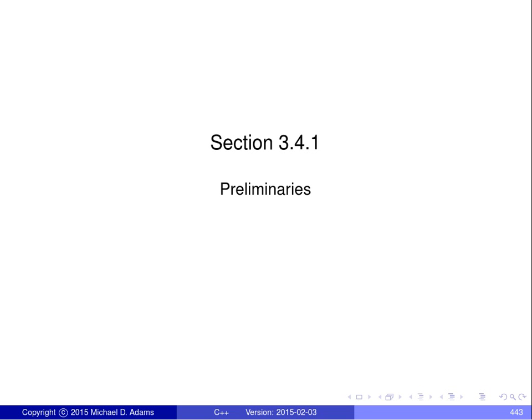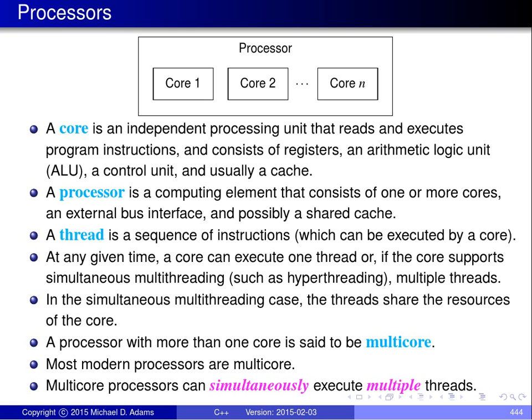Before entering into a discussion on concurrency, I want to introduce a little bit of background information. Some of this may be material you're already familiar with, but for the sake of students who don't know, for example, what multicore means, it's worthwhile to spend a few minutes introducing these terms to ensure everyone has at least a basic understanding. To begin, I need to introduce some basic terminology. A core or processor core is an independent processing unit that reads and executes program instructions stored in memory.